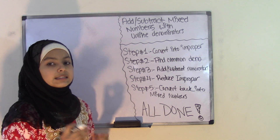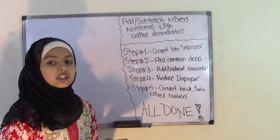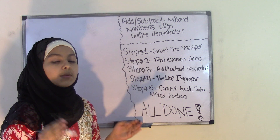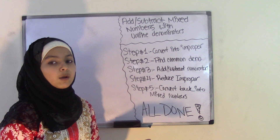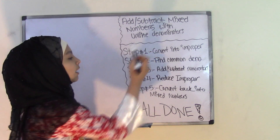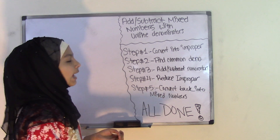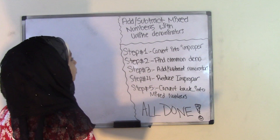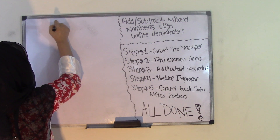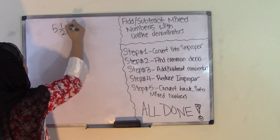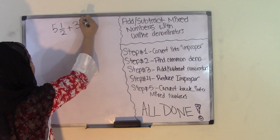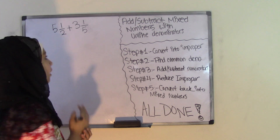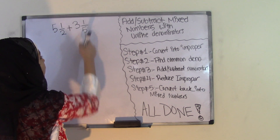The same rules apply for both addition and subtraction, so I'm just going to be doing an addition problem to show you how it works, because it's the same five steps for both addition and subtraction. So today I'm going to be doing an addition problem with two mixed numbers: five and a half plus three and one-fifth. So these are my two mixed numbers.